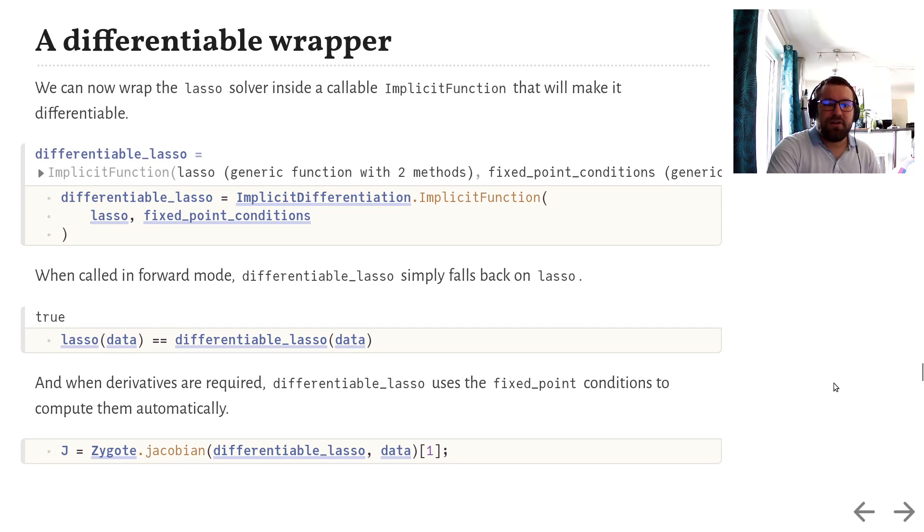Once we have them, we can take our lasso function and wrap it into an object called implicit function, which is the only export of our implicit differentiation package. And this wrapper is actually a differentiable, callable object. So, we construct it by combining the lasso solver with the fixed point conditions outlined above.